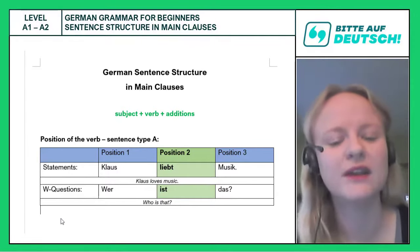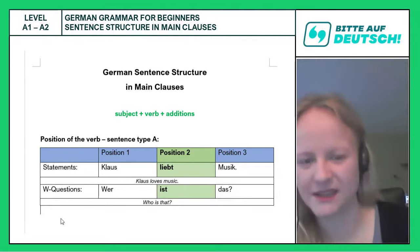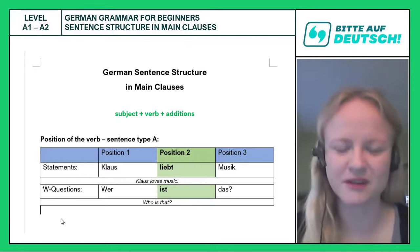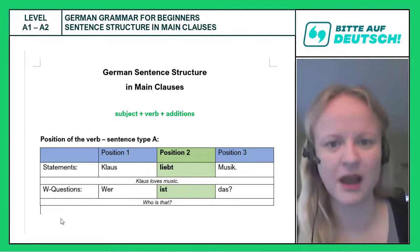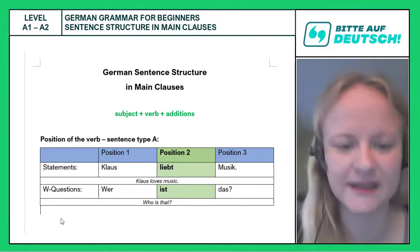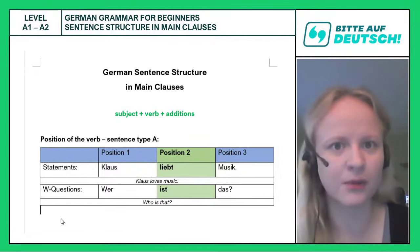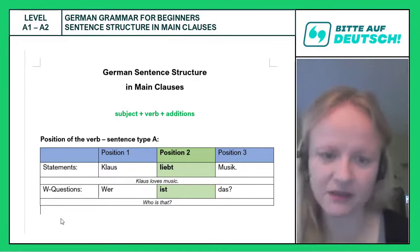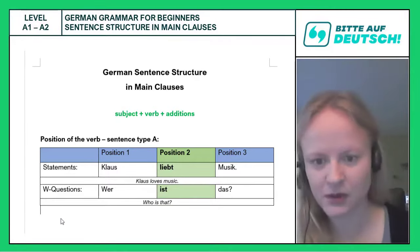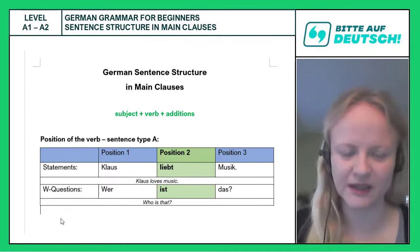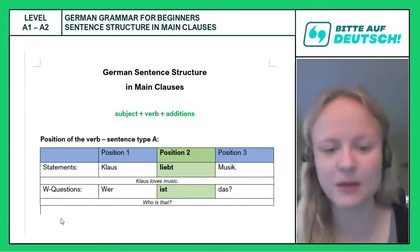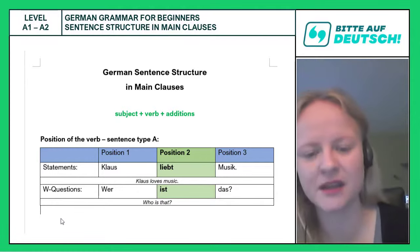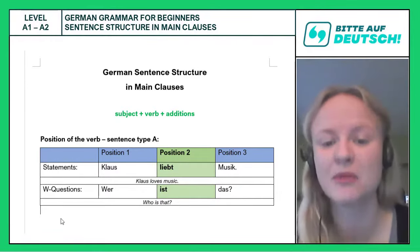The same sentence structure applies when we ask W-questions. W-questions in English start with when, who, why, how, where — they all start with W. In German as well, most of them start with W: wer, wann, wie, wo, was, warum, and so on. I will teach you how to ask open-ended and closed-ended questions in a very early lesson. For now, I only want you to know where to put the verb in a W-question. The verb is in position two — position one is the question word. To summarize: statements and W-questions belong to sentence type A, where the conjugated verb is placed in the second position.